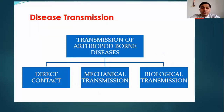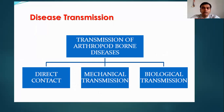How exactly does disease transmission by arthropods take place? It can be by direct contact, mechanical transmission, or biological transmission. Remember there are three types of disease transmission processes: direct contact, mechanical, or biological transmission.